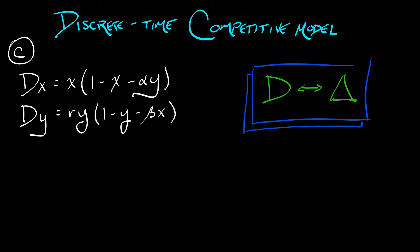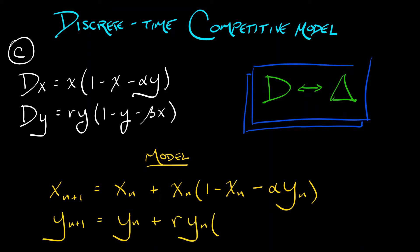And what happens is when we write that out, we get the model x_n+1 equals x_n plus x_n times quantity 1 minus x_n minus alpha times y_n, and y_n+1 equals y_n plus r times y_n times quantity 1 minus y_n minus beta times x_n. That is a discrete time version of this competitive model.